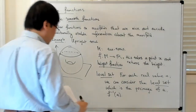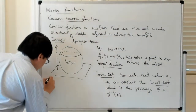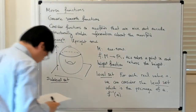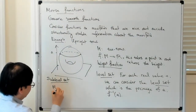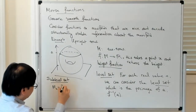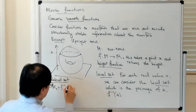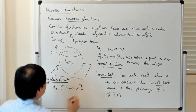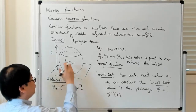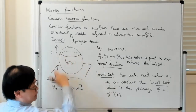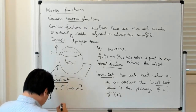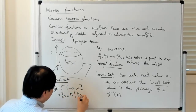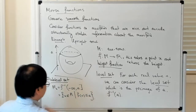The other thing you can introduce is what is called the sub-level set. Let me denote this by M_A. This is the pre-image of the interval from minus infinity to A. What that basically means is that it's the set of points X in the manifold with the property that the function value at X is less than or equal to A. This is what's called the sub-level set.